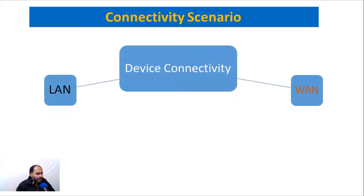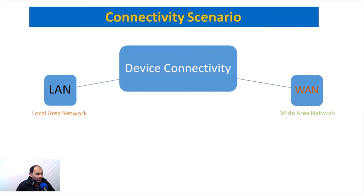So device connectivity on a LAN and on a LAN/WAN — local area network and wide area network. If we connect our device on a LAN, which is a local area network within your premises or the same network, there must be an IP scheme that we configure on devices.